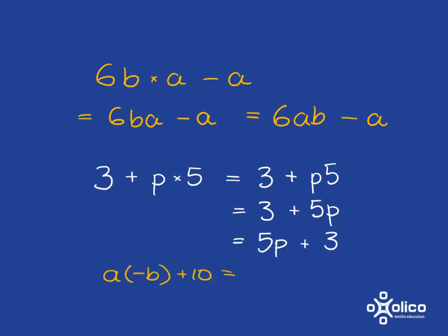If you have something like this, where you've got a with negative b in brackets, what you mean is a multiplied by negative b. And you can actually write that more nicely as you've just got a times b and it has to be negative. And so it will be nicely written as negative ab plus 10.